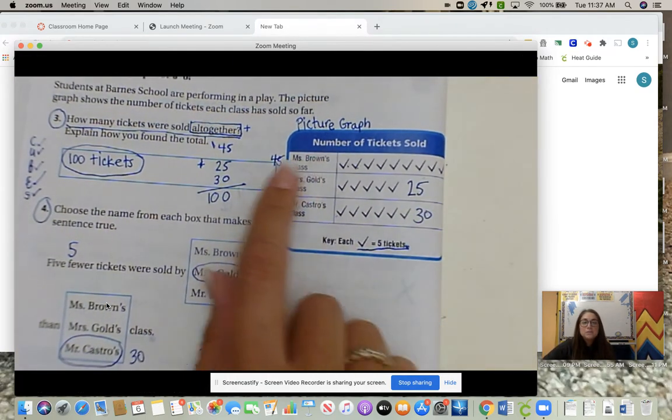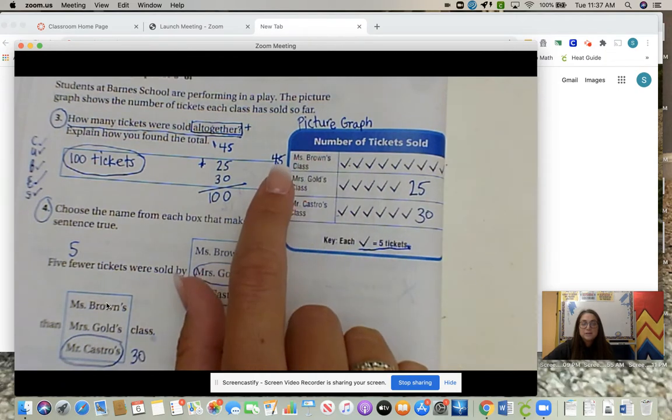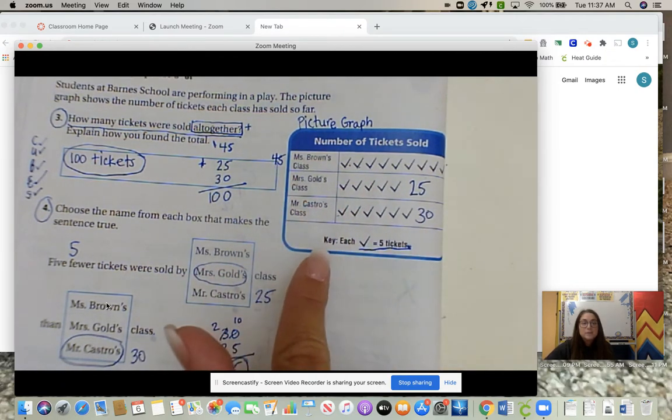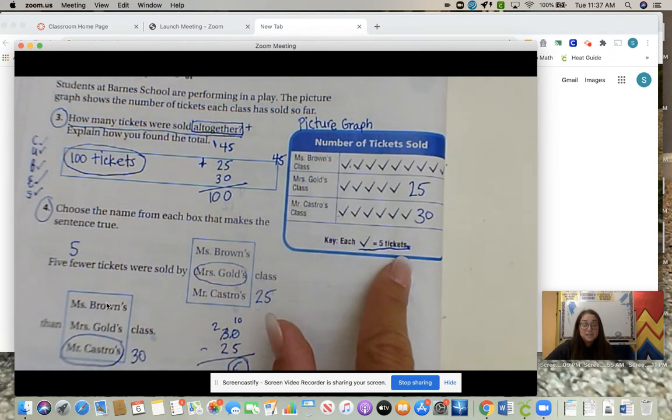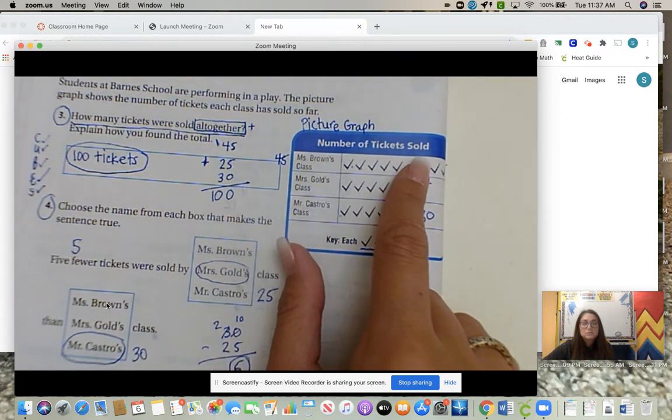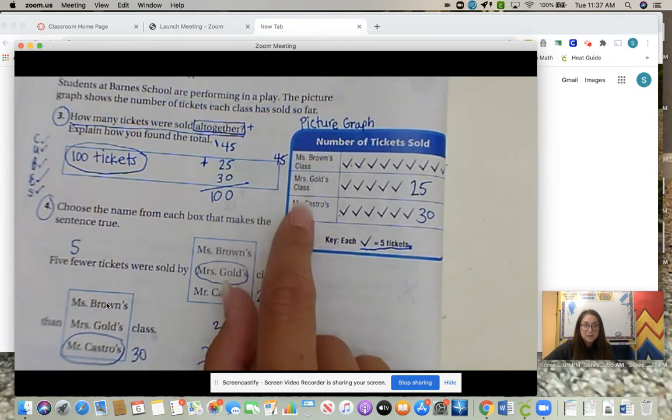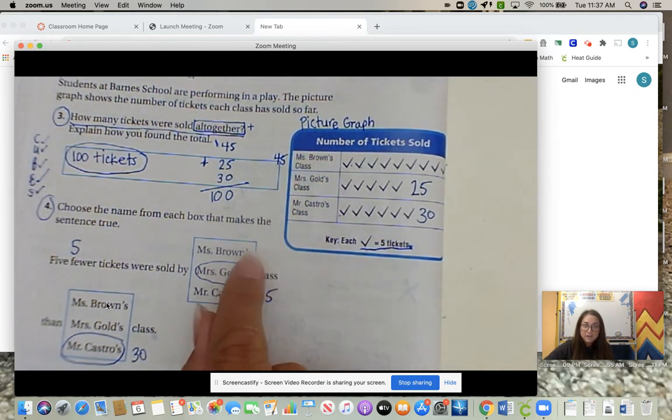First off, we always want to label our picture graph. We don't have numbers, so we want to figure out what the numbers are. So each check mark is five tickets, so we know we're skip counting by fives. Number of tickets sold, so we are working on number of tickets sold for these three classes: Ms. Brown's, Mrs. Gold's, and Mr. Castro's.